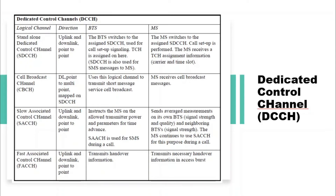The Cell Broadcast Channel (CBCH) is used by the BTS to transmit Short Message Service cell broadcast. The Slow Associated Control Channel (SACCH) is used for transmission of control data and commands associated with a particular traffic channel — examples include commands to change the power emitted by the mobile station, prepare for handover, and send measurement reports. The Fast Associated Control Channel (FACCH) is used to send urgent messages associated with a particular link realized on the traffic channel.